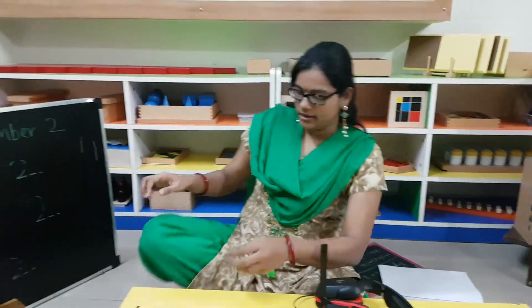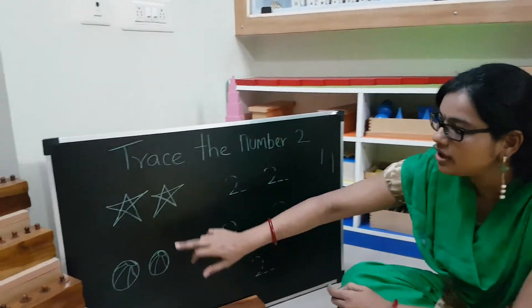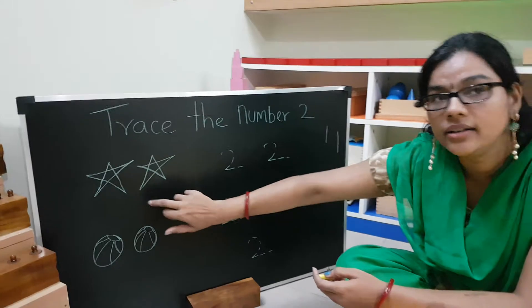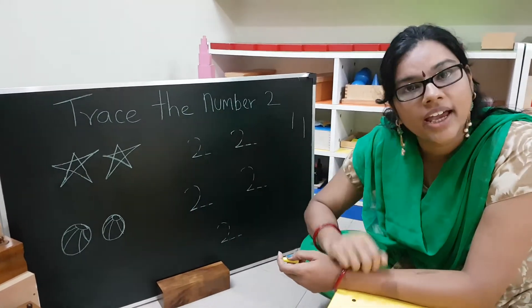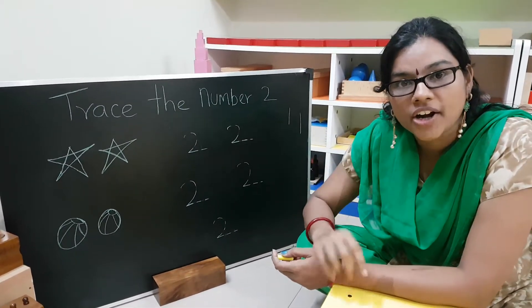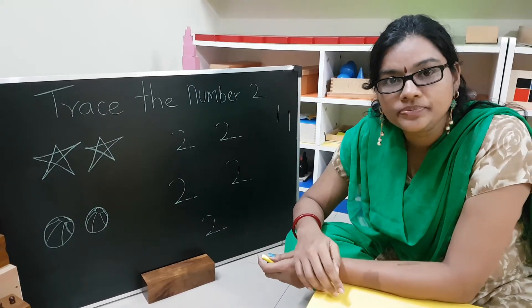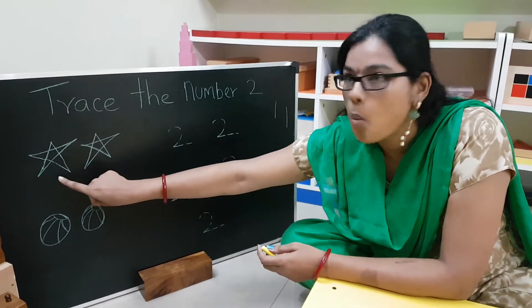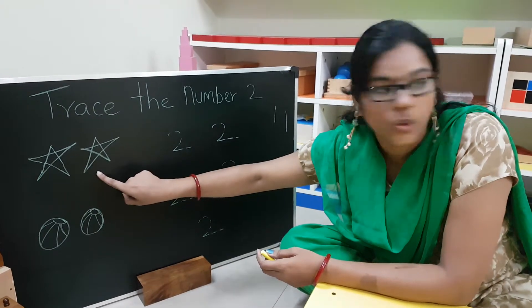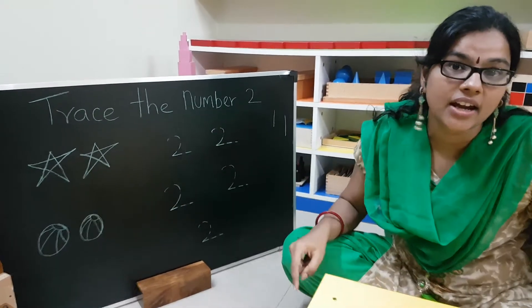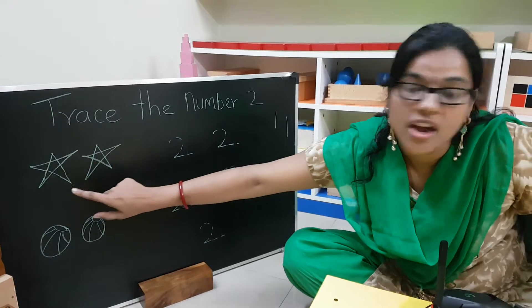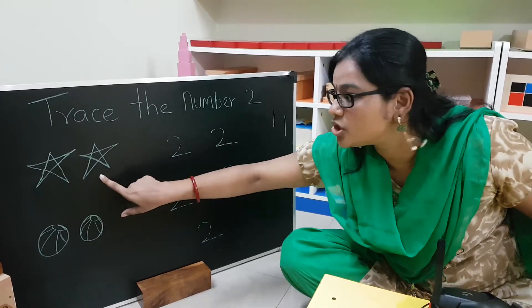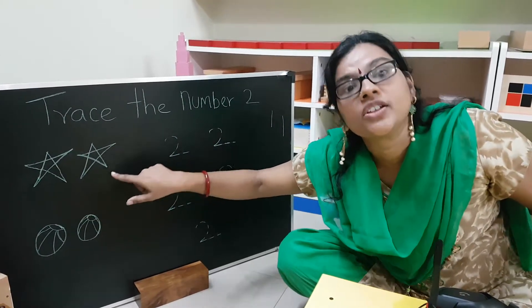Today we are going to see the next number. Today we are going to learn the next number which is 2. Coming here — you see what is this? These are stars. How many stars are there? There are 2 stars. Shall we count it? 1, 2. How many stars are there now? 2 stars. 1, 2. So there are 2 stars.